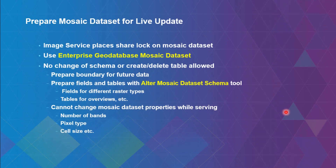Once you have your derived Mosaic dataset optimized and want to publish and share — especially for live updates — it's recommended you use Enterprise Geodatabase to store it so multiple users can access it simultaneously. It's also recommended to prepare your Mosaic dataset ahead of time: if you know your area of interest, provide a larger boundary to cover all your data when publishing. You can change the Mosaic setting once published using the Alter Mosaic Dataset Schema tool, but there are still things you cannot change after publishing, such as number of bands, pixel type, and cell size.